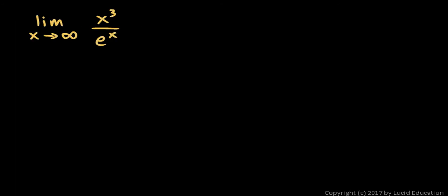The limit as x approaches infinity of x cubed over e to the x. As x grows without bound, the numerator gets infinitely large and the denominator gets infinitely large. So, loosely speaking, substituting infinity in for x gives us infinity over infinity — an indeterminate form. L'Hopital's rule says we can try to evaluate the limit by taking the derivative of the numerator and the derivative of the denominator.